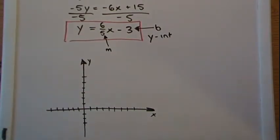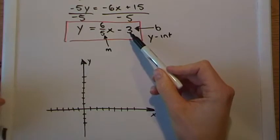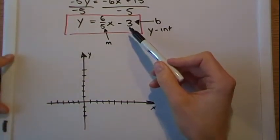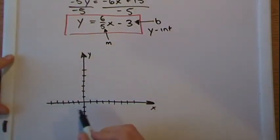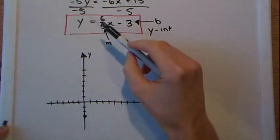So we take the information that we're given. The y-intercept is supposed to be negative 3. All right, so we plug in negative 3, the point 0, negative 3, right here.